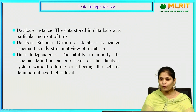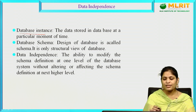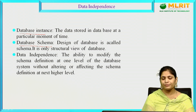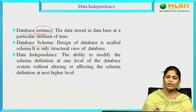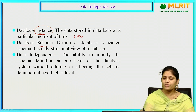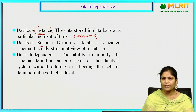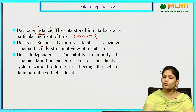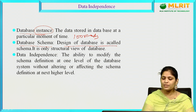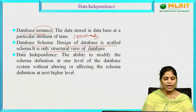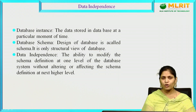Next, what is data independence? Before going to know about data independence, we need to know about two terminologies: database instance and database schema. A database instance refers to the data stored at a particular moment in time — for example, storing 100 records at this moment. Schema is nothing but the design — the diagrammatic representation of a database. It is only the structural view of a database.